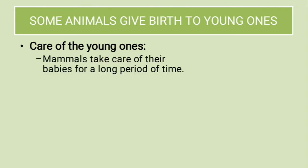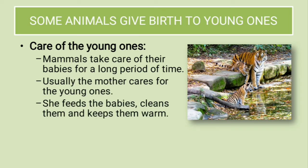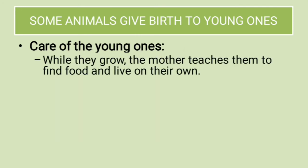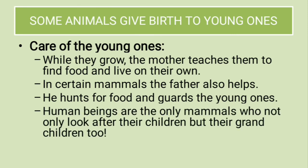How do mammals care for their young ones? Mammals take care of their babies for a long period of time. This is a picture of a tiger and her cub. Usually the mother cares for the young ones — she feeds the babies, cleans them, keeps them warm, and protects them from enemies. Every animal mother cares about her young ones. While they grow, the mother teaches them to find food and live on their own. In certain mammals, the father also helps — he hunts for food and guards the young ones. Human beings are the only mammals who not only look after their children, but their grandchildren too.